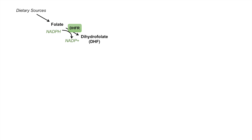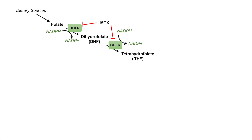Once we have dihydrofolate, it will again be acted on by the same enzyme, dihydrofolate reductase, to form tetrahydrofolate. Again we use another NADPH in this process, which is oxidized to NADP+. Importantly, with regards to cancer therapies, methotrexate — an anti-cancer drug — actually acts as an inhibitor of the enzyme dihydrofolate reductase.